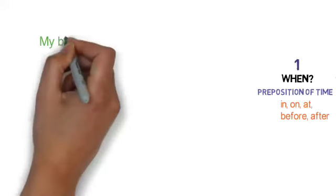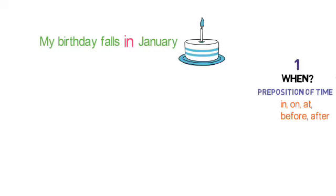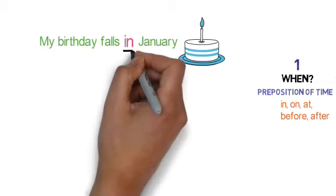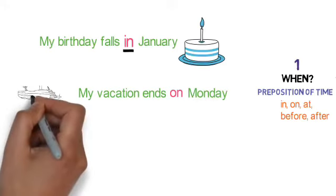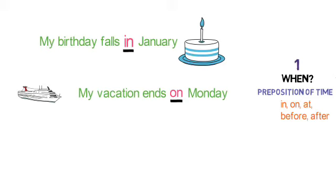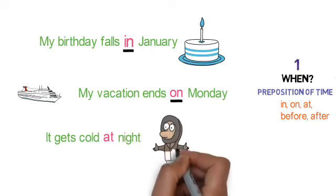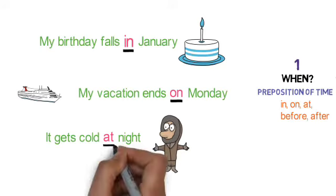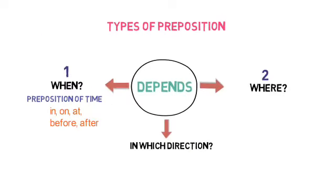Examples of preposition of time are: in, on, at, before, after. For example, 'My birthday falls in January' — here 'in' is suggesting when my birthday is. Another example: 'My vacation ends on Monday' — so 'on' is an example of preposition of time. And 'It gets cold at night' — so 'at' is also a preposition of time.